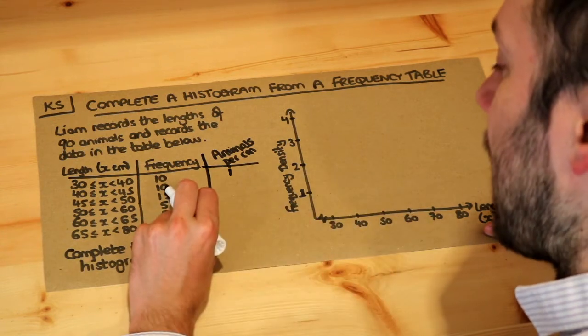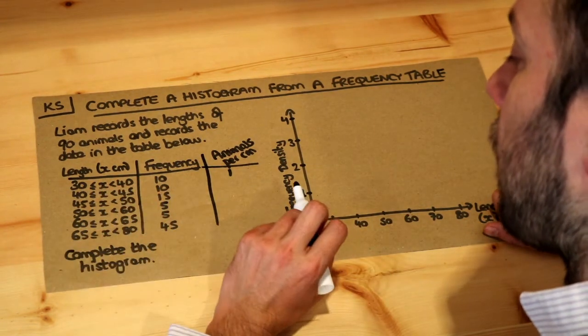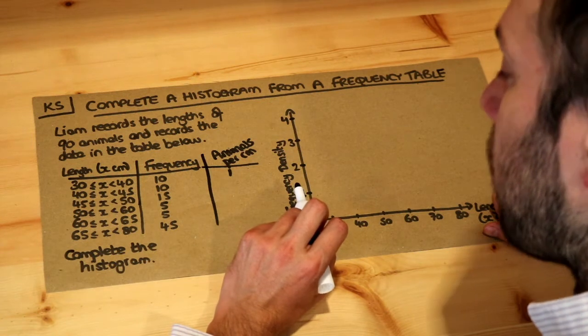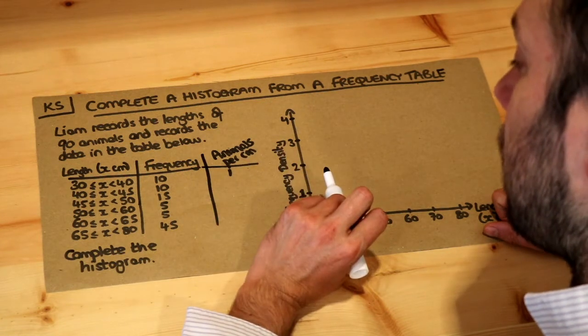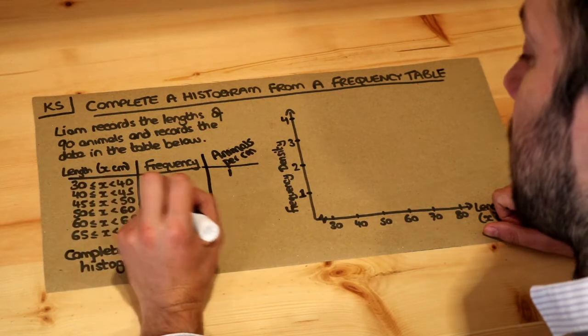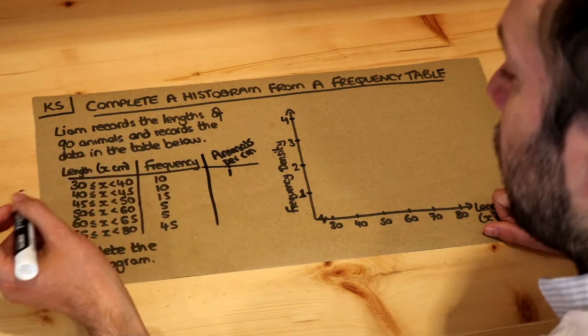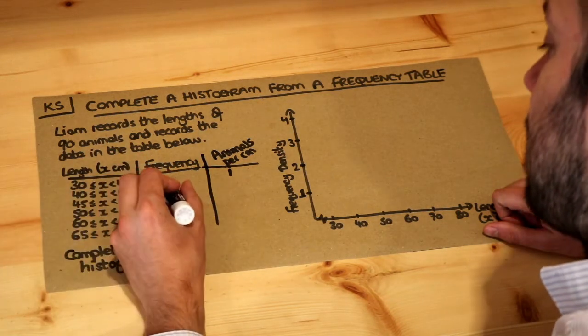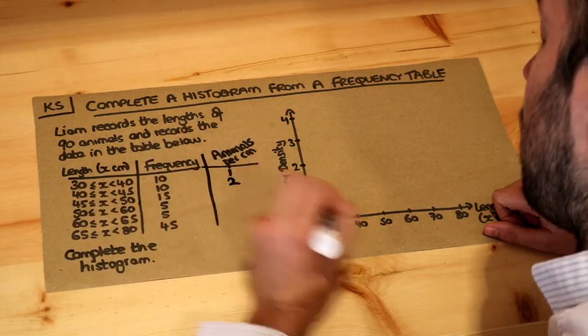Now we've got 10 animals here spread out across a 5 centimetre range, so how many animals have we got per centimetre? Well if there's 10 animals for 5 centimetres, then we've got two animals on average per centimetre, so it's 10 divided by 5 equals 2.